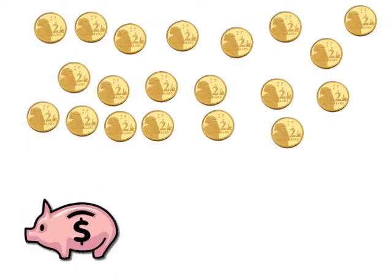Today we're going to solve some problems using skip counting. One of the problems you might have is counting all your pocket money. Here I've got two dollar coins, so each one of these coins is worth two dollars. I'd like to count how much money I have in total, all together, if I add it all up. To do that we're going to use skip counting — we're going to skip count in twos.